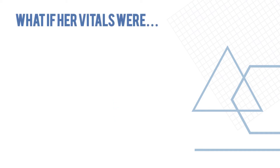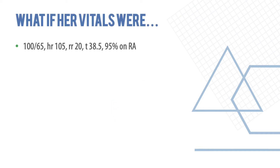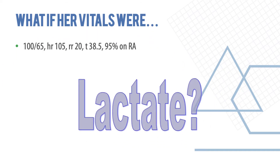However, if the same patient had vitals of blood pressure 100/65, heart rate 105, respiratory rate 20, temperature 38.5°C, and saturation 95% on room air, you'd want to determine the degree of sepsis further.